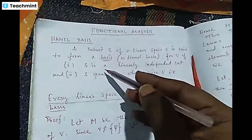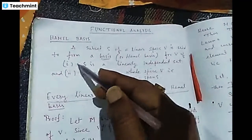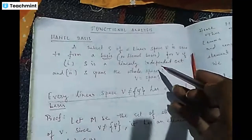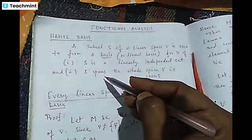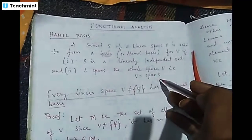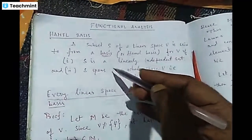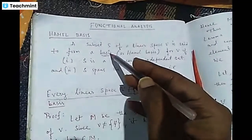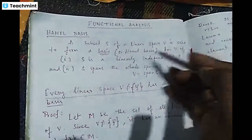The subset S is a Hamel basis if two conditions are satisfied: first, S must be a linearly independent subset of V; second, S has to span V, or V is equal to span of S. If these two conditions are satisfied, we say that S is the Hamel basis for the linear space V.